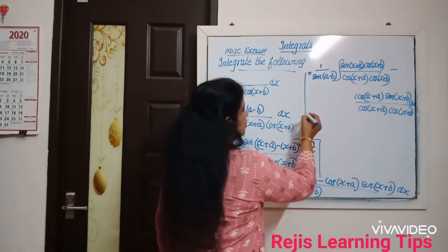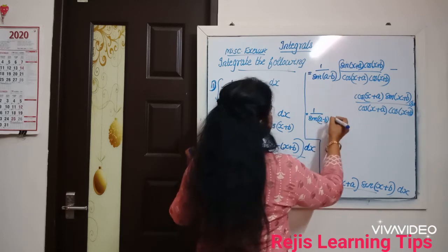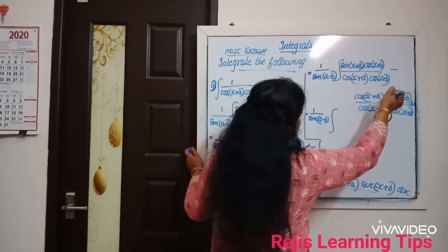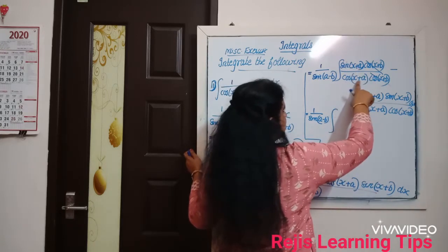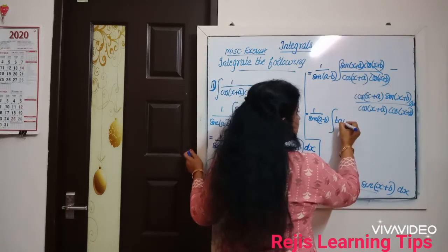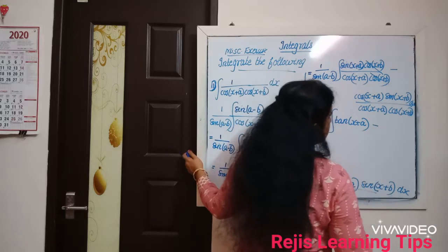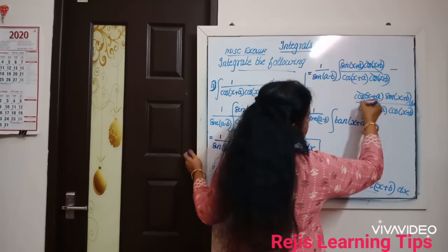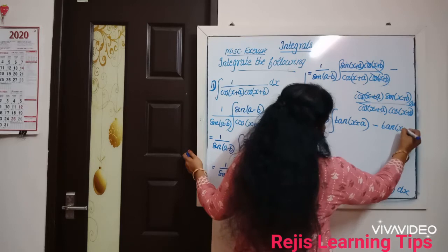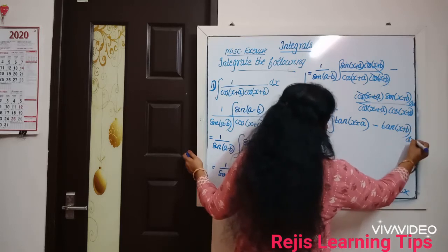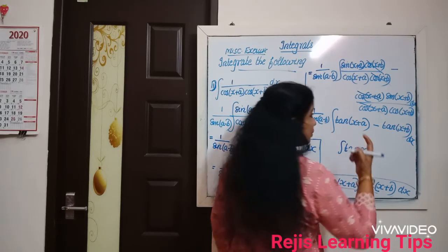Here cos(x+b) and cos(x+b) cancel, so we get sin(x+a) divided by cos(x+a), which is tan(x+a). Then cos(x+a) and cos(x+a) cancel, giving us tan(x+b). So we have 1 by sin(a minus b) into the integral of tan(x+a) minus tan(x+b) dx.